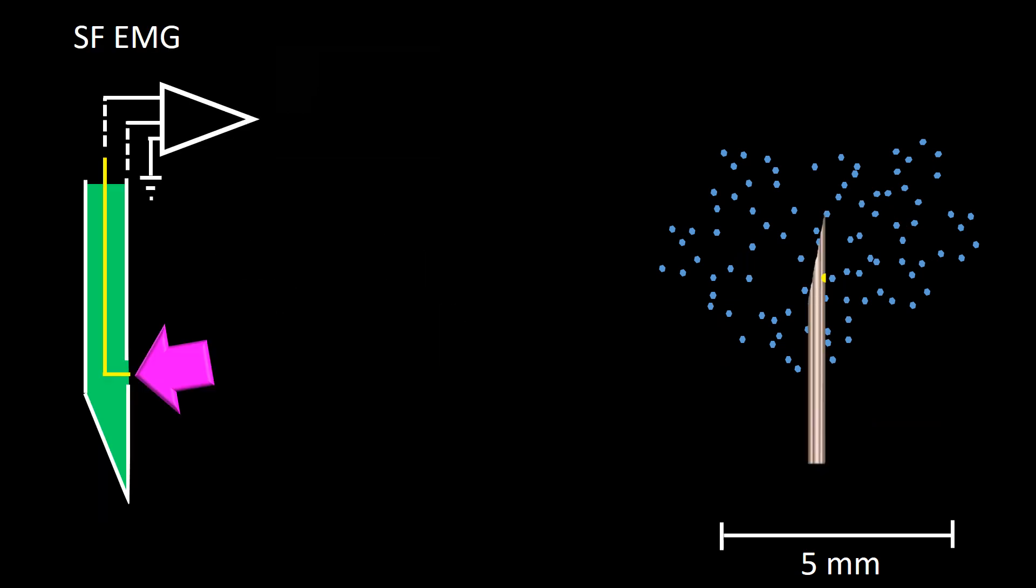The single fiber EMG needle consists of a very thin electrode with its surface on the side about 7.5 millimeters from the tip of the electrode with a diameter of 25 micrometers and a cannula which is used as reference.